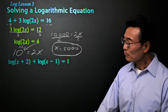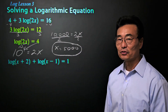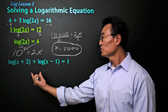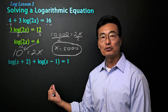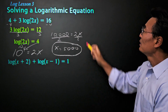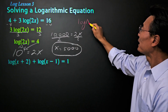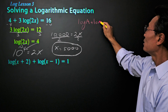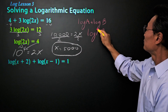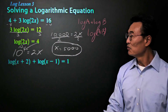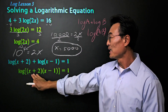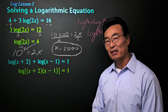Here's another example. When we're given log of x plus two plus log of x minus one equals one, we need to combine these two logs into one log before we can solve for x. The rule is: if you have log of a plus log of b, it equals log of a times b. So here, we're going to change this into log of x plus two times x minus one.